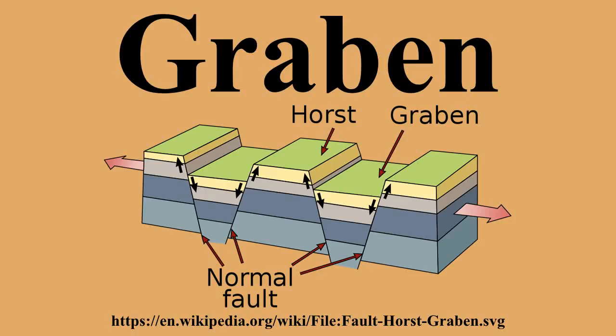Half Graben: In many rifts, the Graben are asymmetric with a major fault along only one of the boundaries, and these are known as half Graben. The polarity of the main bounding faults typically alternates along the length of the rift. The asymmetry of a half Graben strongly affects syntectonic deposition.